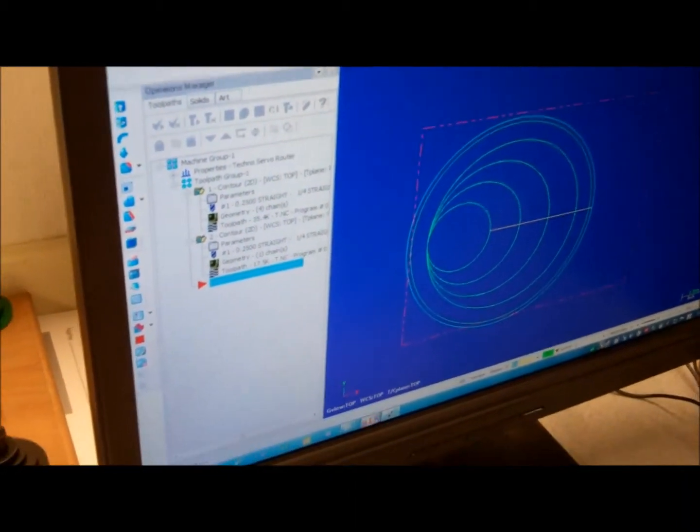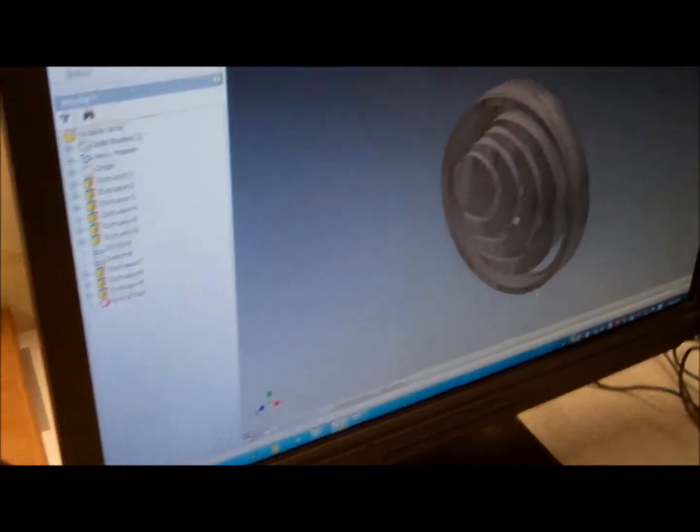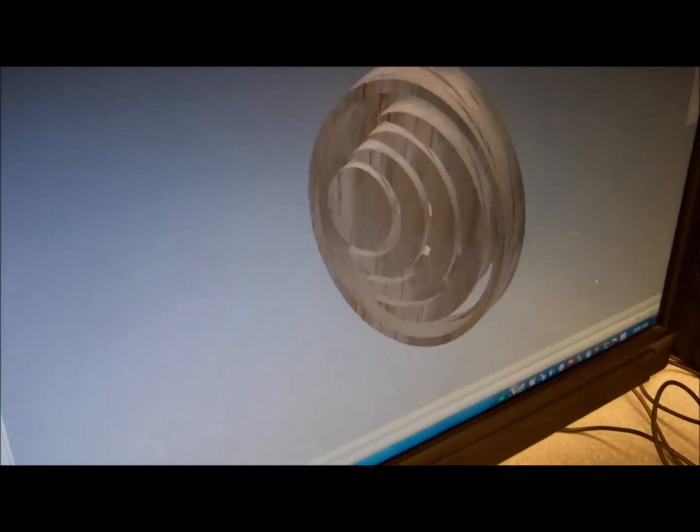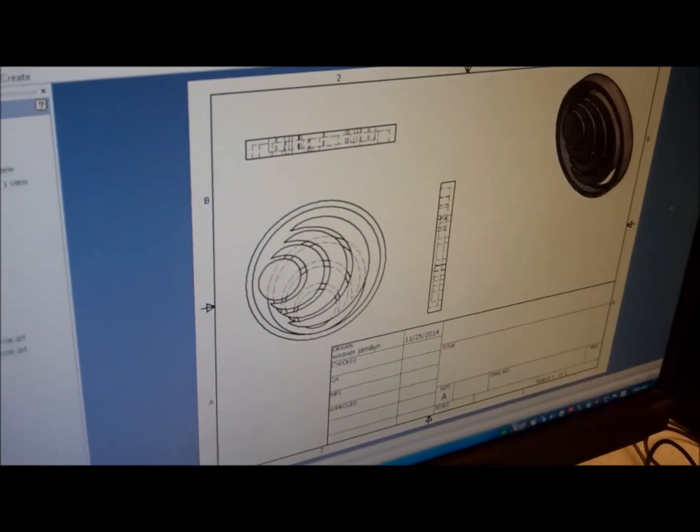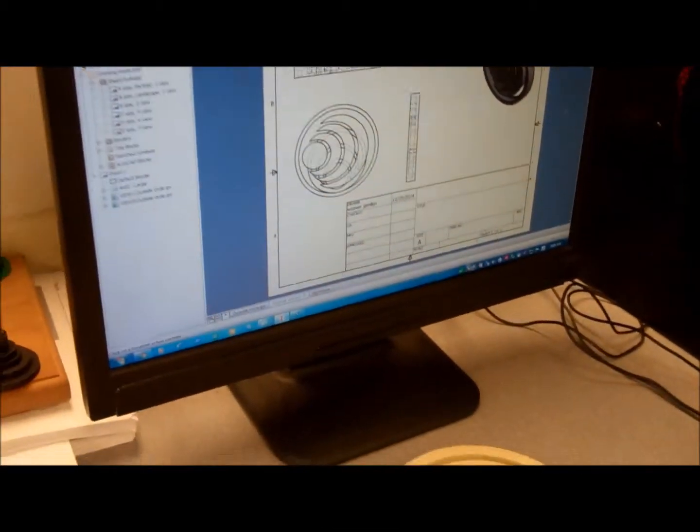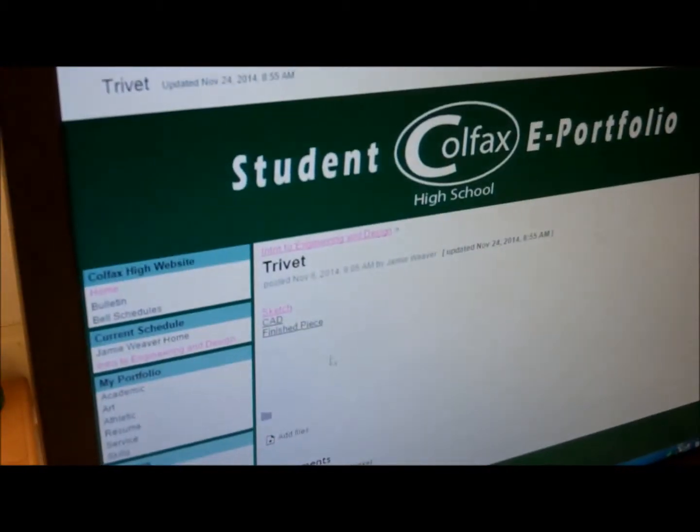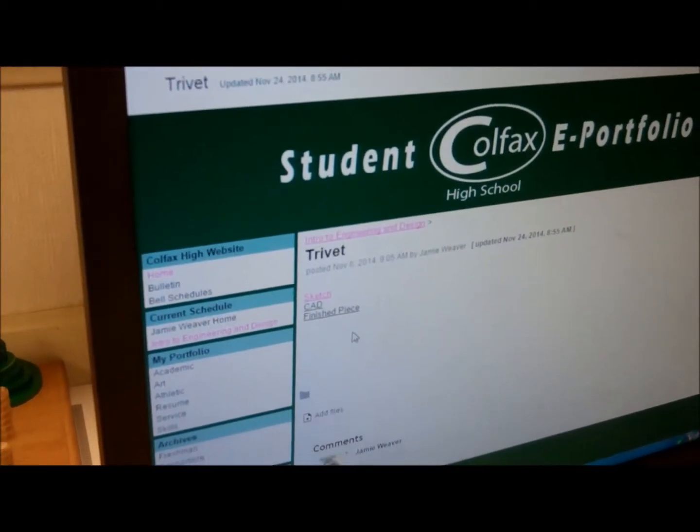And then you also did your CAD files in Autodesk Inventor. Do you have those? So this is the actual part. And then here's a working drawing that you take in the shop with dimensions. All these pieces are posted on your portfolio and under the trivet are all of the pictures.